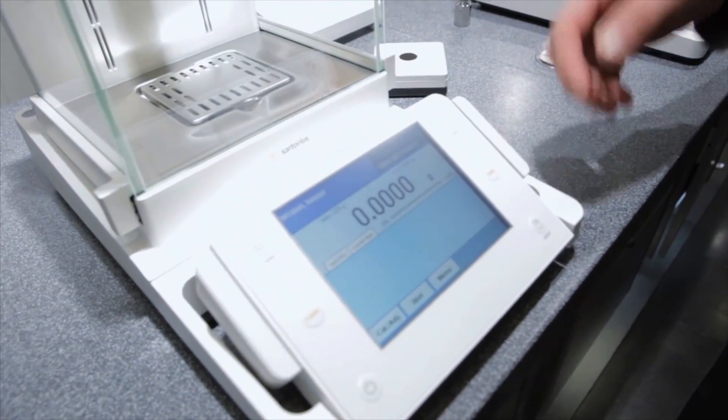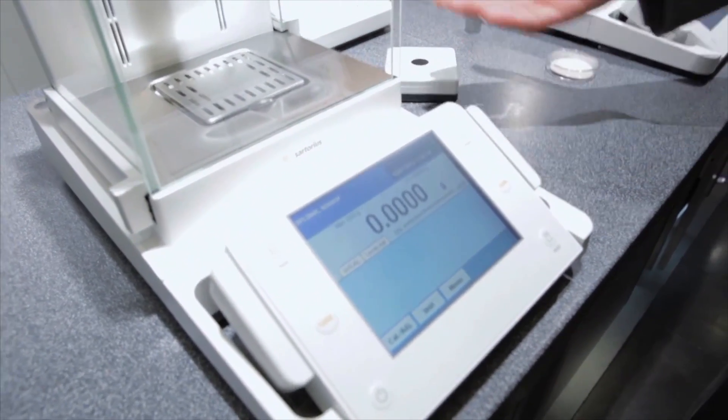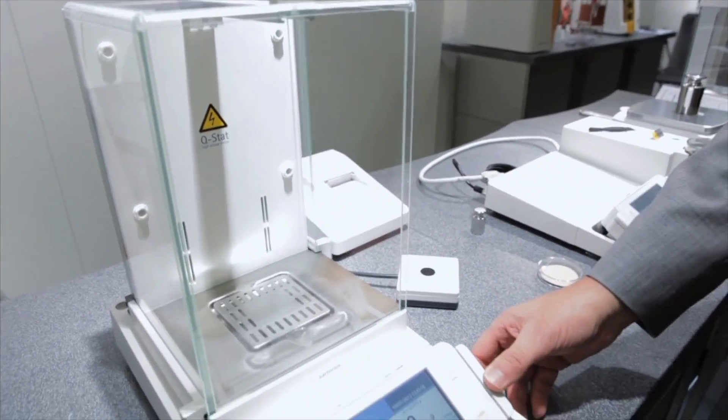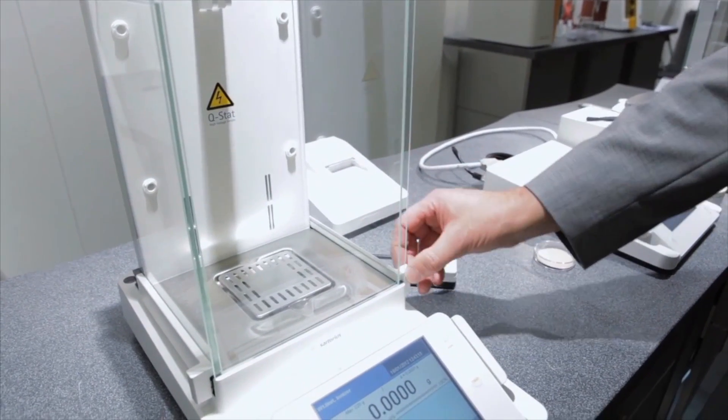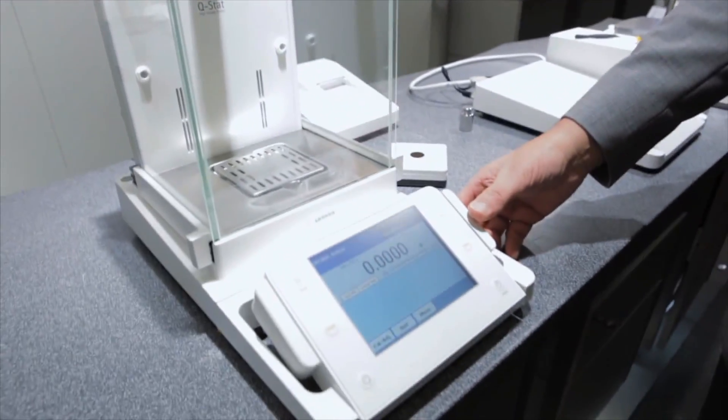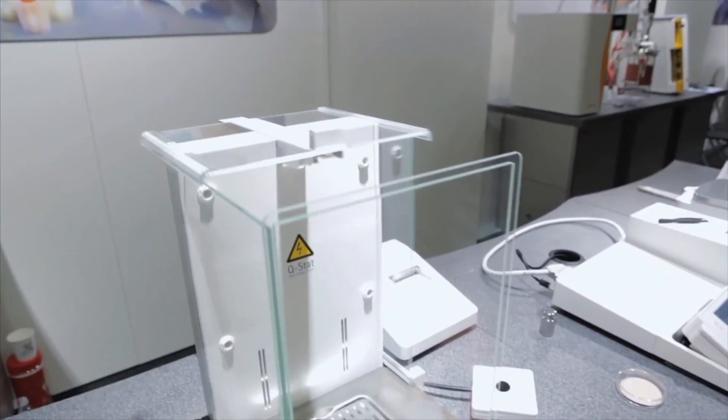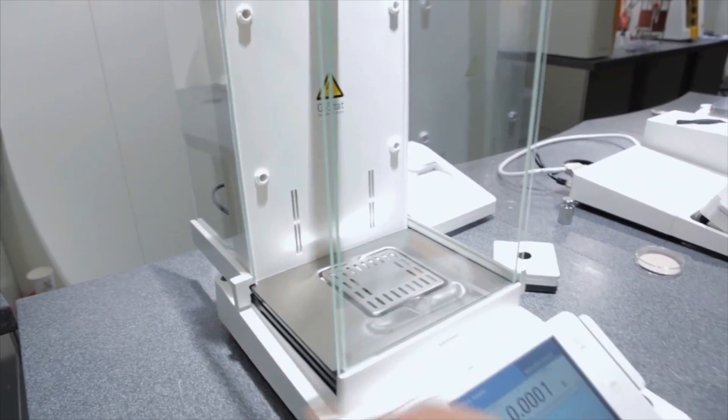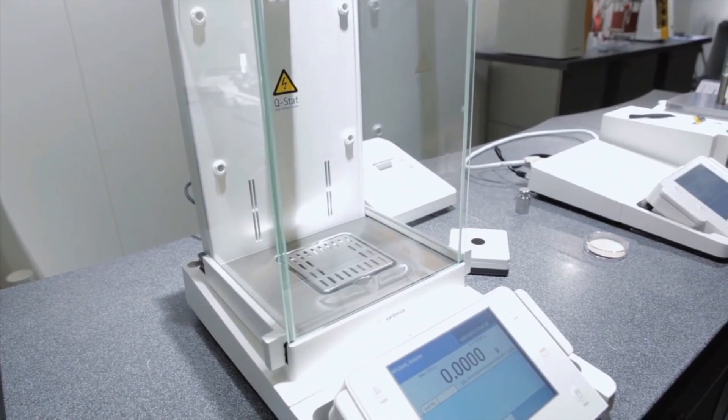This is the analytical four and five decimal place balance and we have automatic draft shield which can be configured by the operator to open either just the side door, the side door and the top, or if preferred, the left hand door only. So the operator is completely in control of exactly how the balance is working.